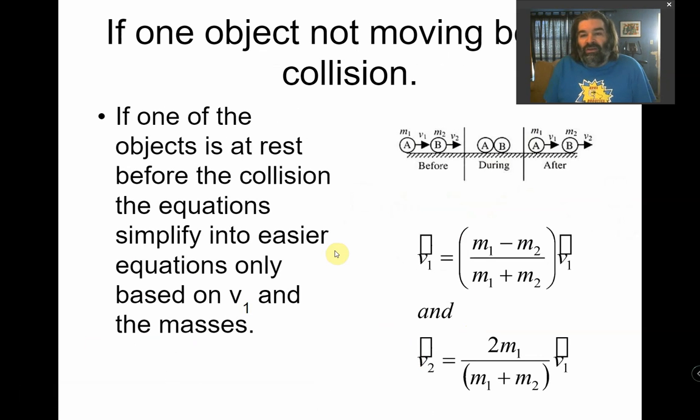Now, if an object isn't moving, so if one object isn't moving. So this is the pool ball scenario where you have a ball coming in, hitting a ball that's at rest, and then both balls are moving afterwards. Because of that,